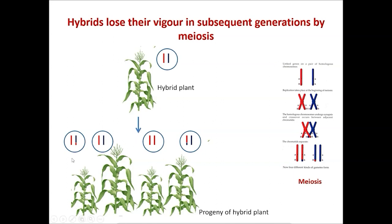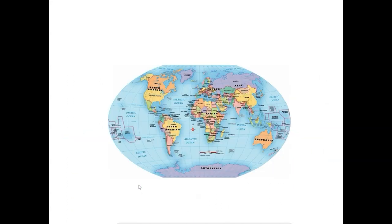Plants grown from these seeds do not give the same yield similar to their hybrid parent plants. This makes the farmers depend upon seed companies every season for good and consistent yield. How can we make hybrids not lose their potency? There are so many research groups worldwide working on how to fix these hybrids by modifying or skipping the process of meiosis.